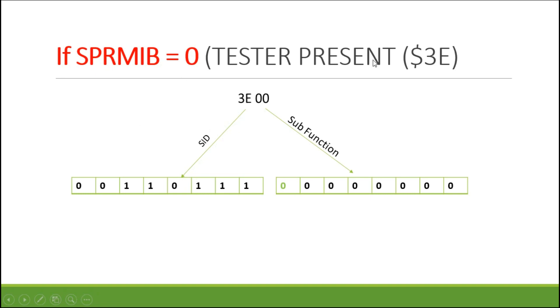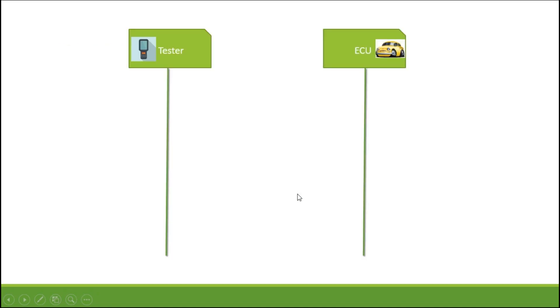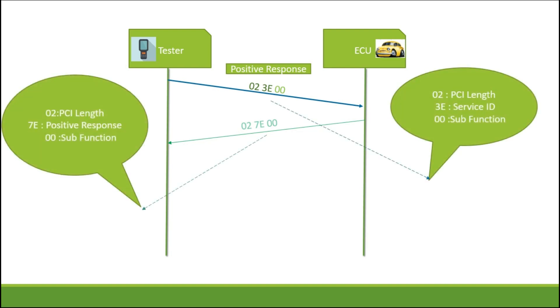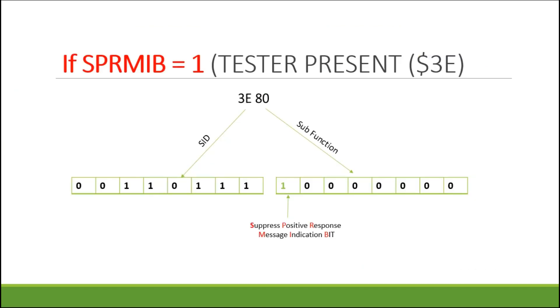So here you can see tester present. So here we set the Suppress Positive Response Message Indication bit is 0. So 3E 00. So here, the Suppress Positive Response Message Indication bit is 0. So the next slide you can see the response.